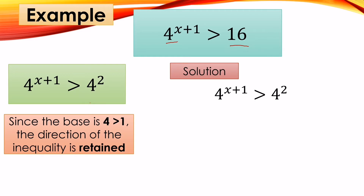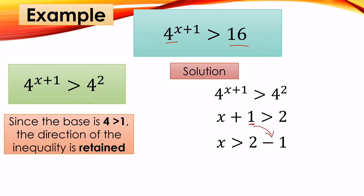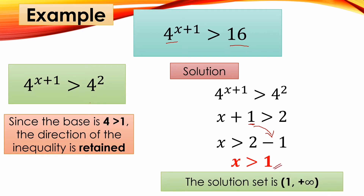So we equate our exponents: x + 1 > 2. Then we move the positive 1 to the other side — it becomes negative 1 — and combine: x > 1. Our solution set is (1, +∞). We use an open parenthesis because 1 is not included in the solution set.